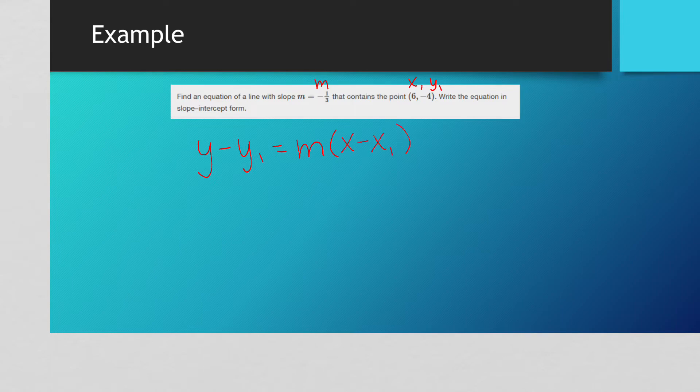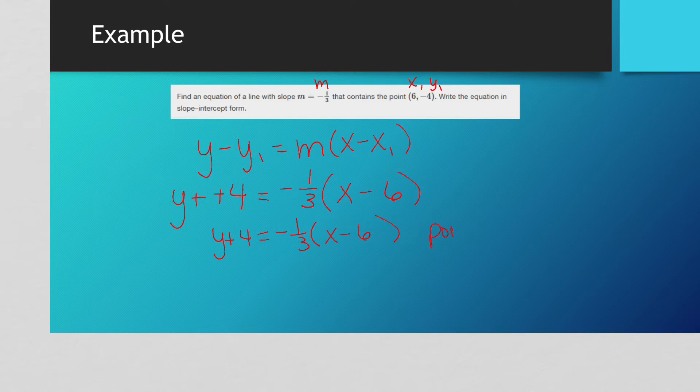So we have y minus, and our y sub 1 is negative 4. So don't forget that negative sign there. Is equal to negative 1/3 times x minus 6. Now, notice right here we have a double negative. So we want to do change, change. So now we have y plus 4 is equal to negative 1/3 times x minus 6. Now, if the problem says leave it in point slope form, you are done. That's the point slope form.